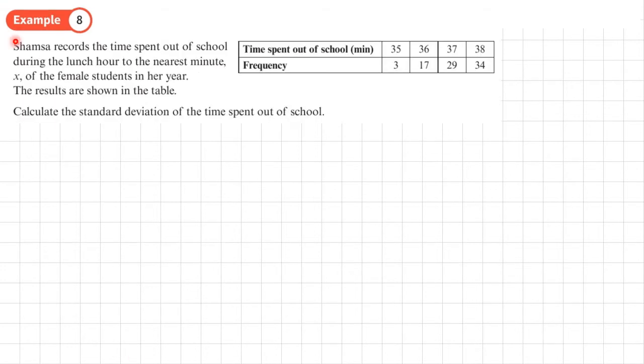Example 8. Shamsa records the time spent out of school during the lunch hour to the nearest minute of the female students in her year. The results are shown in the table. Calculate the standard deviation of the time spent out of school. Here's our formula. We're going to work out each of these bits.